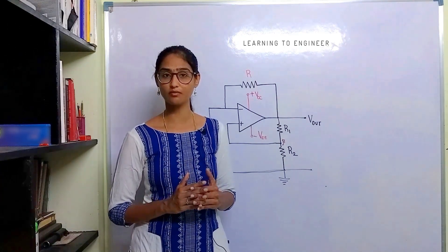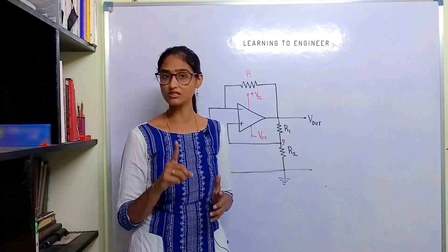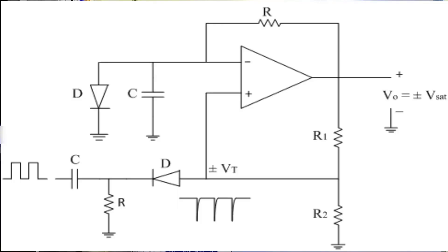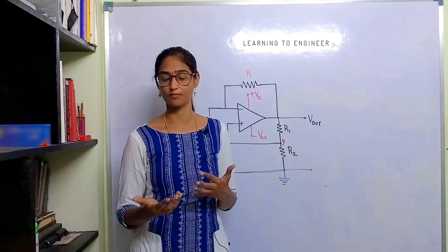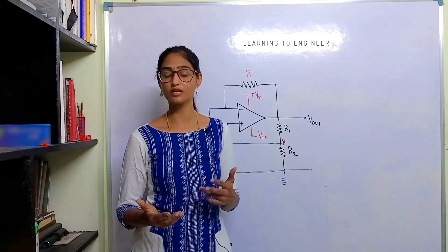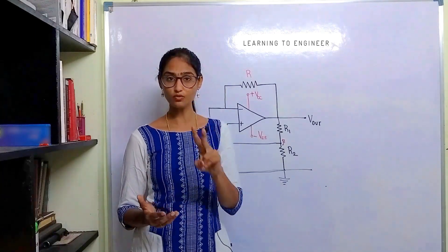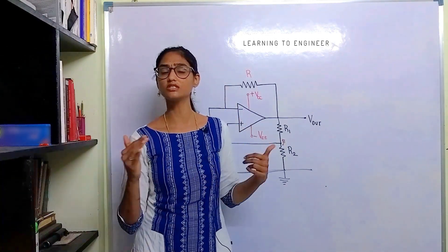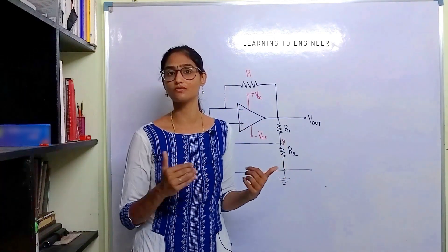In a monostable multivibrator it will have one stable state — when you pass a trigger voltage you will get a signal output, and when you do not pass any input signal you do not get any output. That is a monostable multivibrator. In a bistable multivibrator you will have two different output levels at different points of time, which is decided by the trigger voltage.